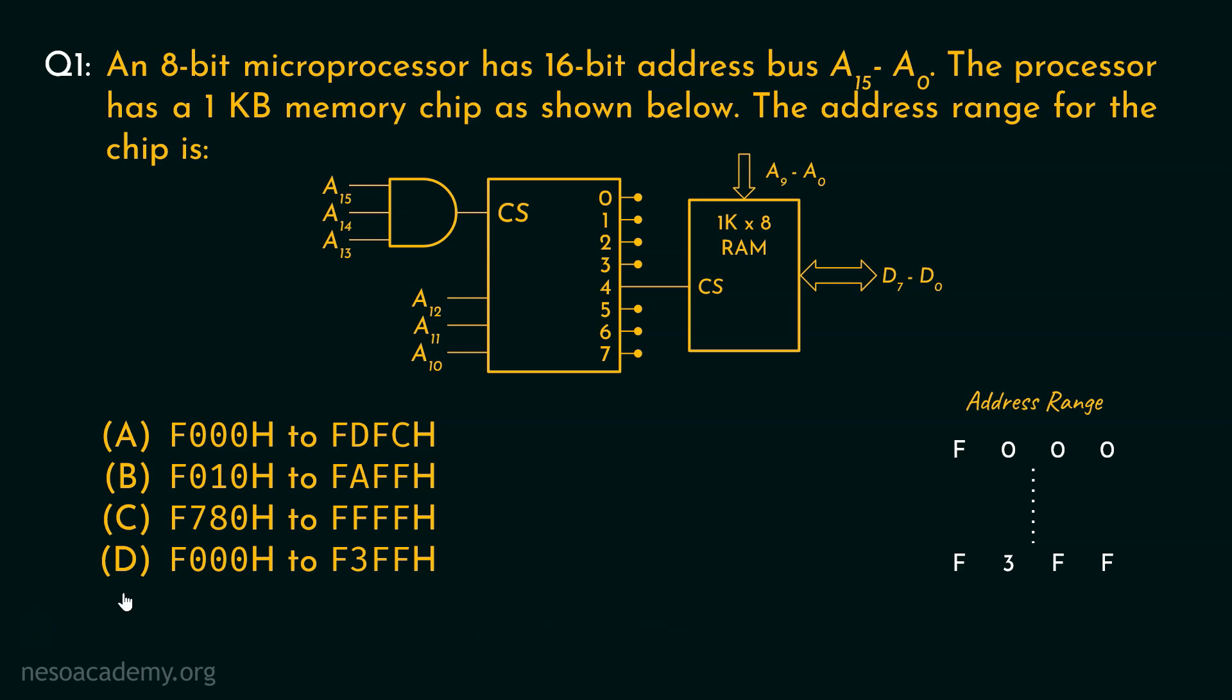Let's now check the options for this. Notice, option D is only providing the correct choice. Therefore, for this 8-bit microprocessor, which has 16-bit address bus, that is A15 to A0, the processor which is accessing 1KB memory chip, due to this organization, the address range for the memory chip, that is the 1KB RAM, is F, triple 0, till F, 3, F, F.